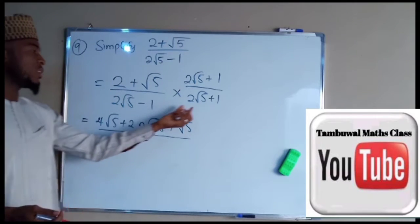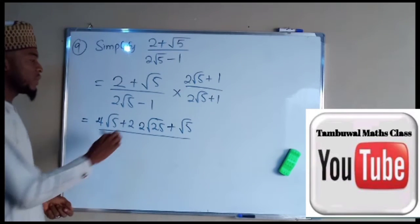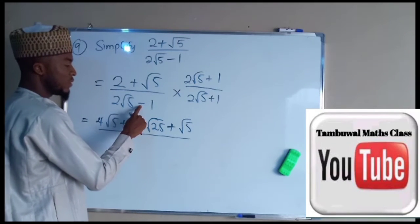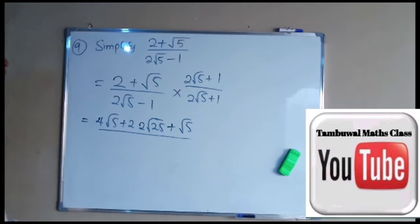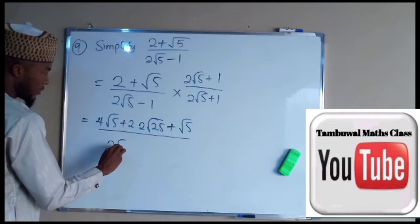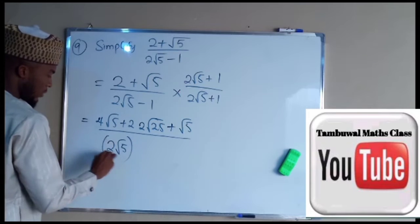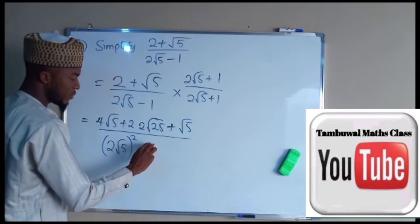This one and this one are the same. The only difference they have is this one has a negative sign while this one has a positive sign. That is what we call difference of squares. Difference of squares is you square the first term, subtract, and square the second term.